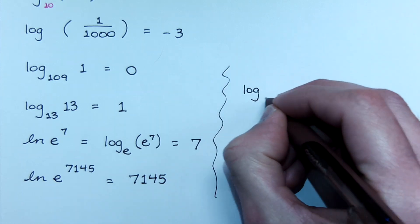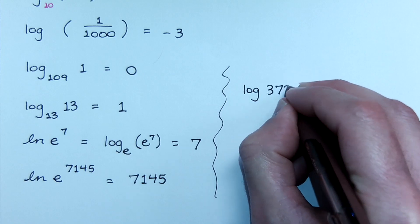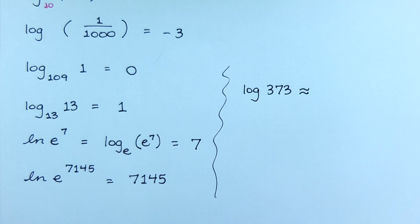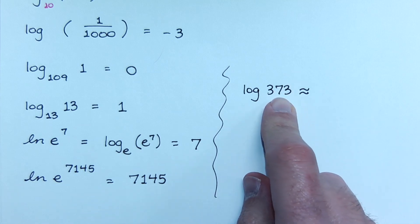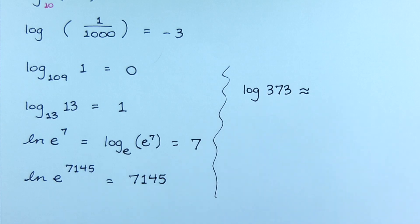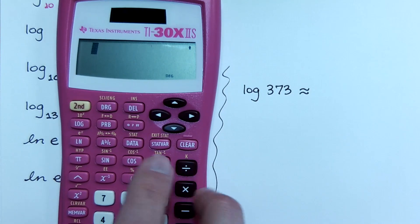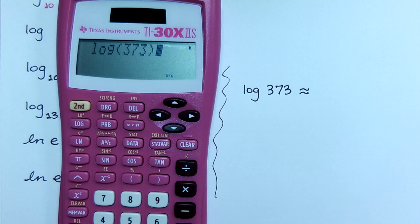What if I ask you to do log of 373? Log base 10? Yeah. Is this a power of 10? So what are you going to have to do? Find out. Yeah, this is where you actually have to use the calculator. And all you have to do is type log of 373. That's it.